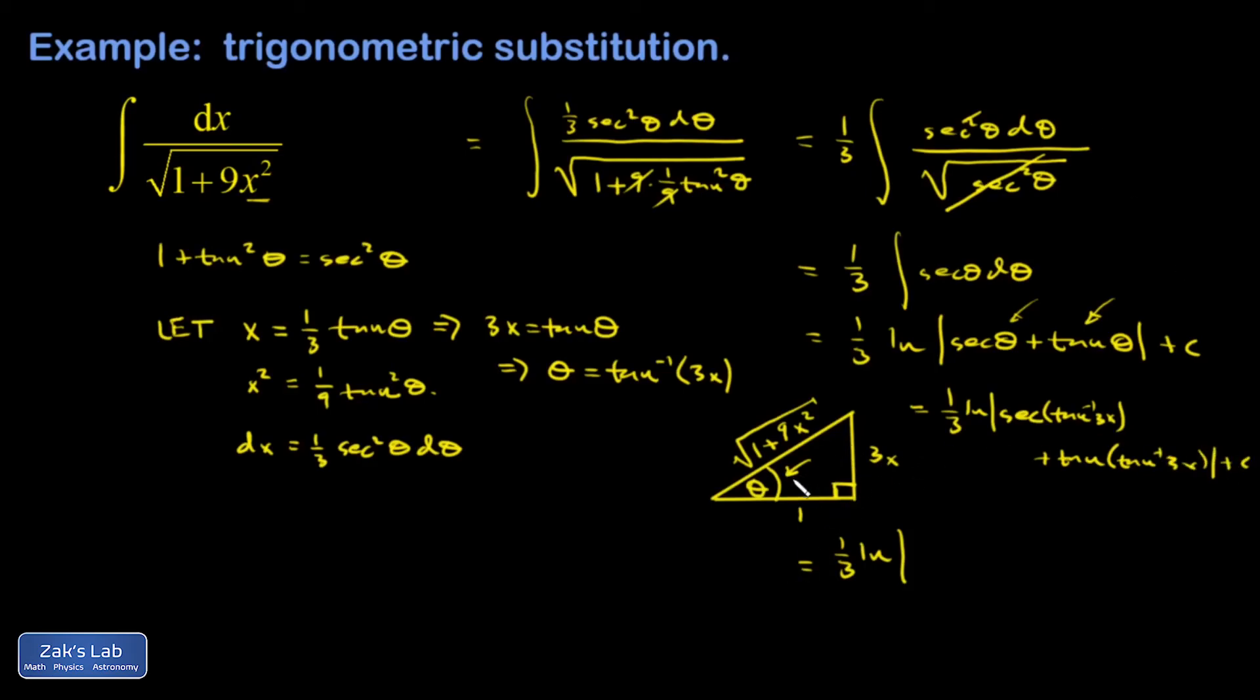So I need the secant of this angle theta, and secant is 1 over cosine. So instead of being adjacent over hypotenuse, it's going to be hypotenuse over adjacent. So I end up with the square root of 1 plus 9X squared over the adjacent side, which was just 1, so I'm not going to write it.